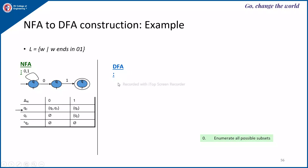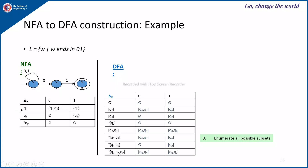To construct the equivalent DFA, first enumerate all possible subsets. With 3 states, all subsets of those states will be the DFA states: empty set, Q0, Q1, Q2, as individual elements, then Q0-Q1, Q0-Q2, Q1-Q2, and Q0-Q1-Q2. The start state is Q0, the same as the NFA start state, and for each subset we must identify the delta-D transitions on each input symbol.